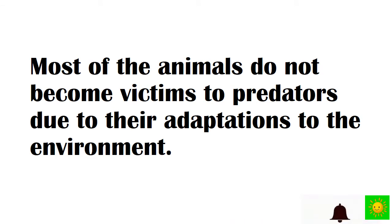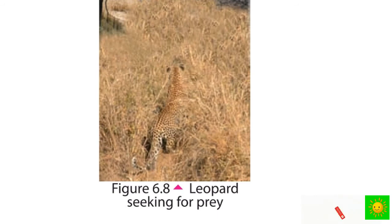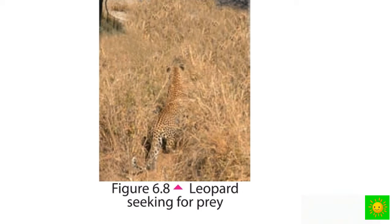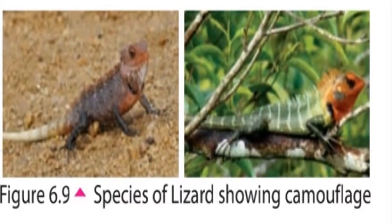Skin color of animals helps them not only to protect themselves from predators but also to find prey. For example, the leopard with spotted skin and dusty color helps it to catch prey without being seen. Some kinds of lizards change their color according to the environment they live in — these species of lizards exhibit camouflage.